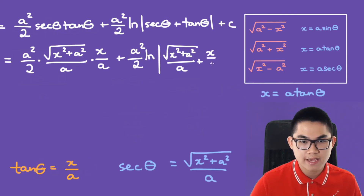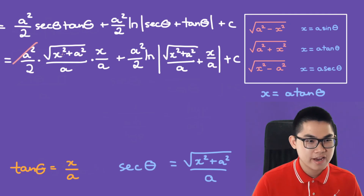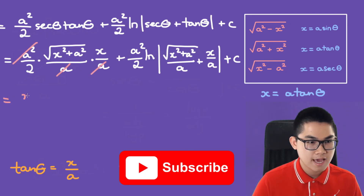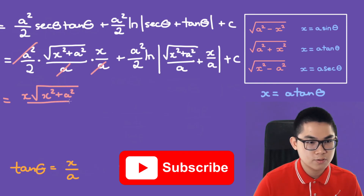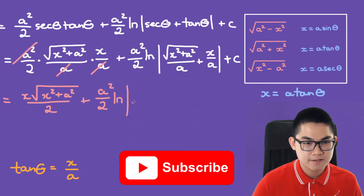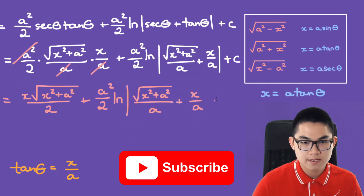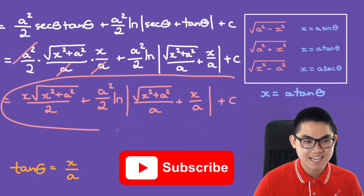The a squared cancels with the two a's in the denominator, giving us x times the square root of x squared plus a squared over 2, plus a squared over 2 times the ln of the square root of x squared plus a squared over a plus x over a, plus c. And this is our answer.